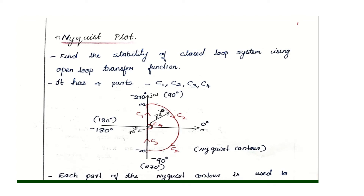Today I am going to explain the Nyquist plot and how to plot it. The Nyquist plot is used for stability analysis. It is used to find the stability of a closed loop system using the open loop transfer function.